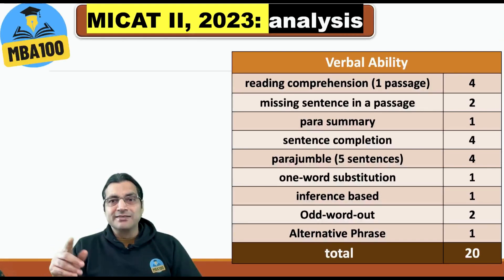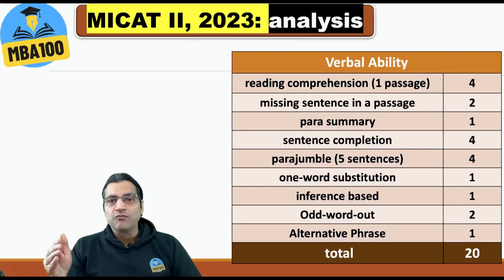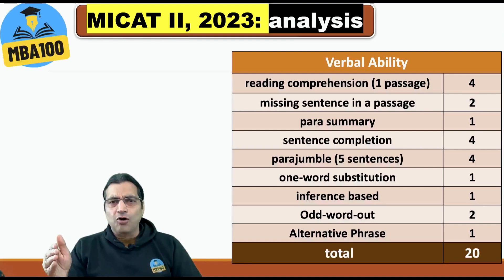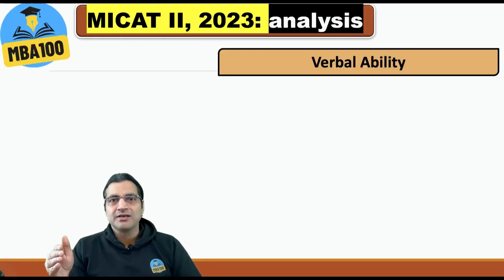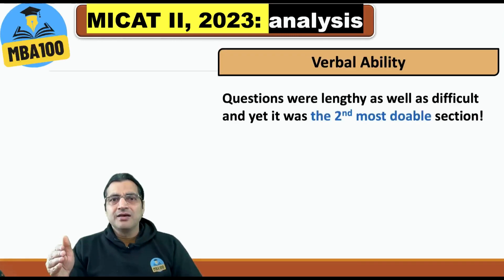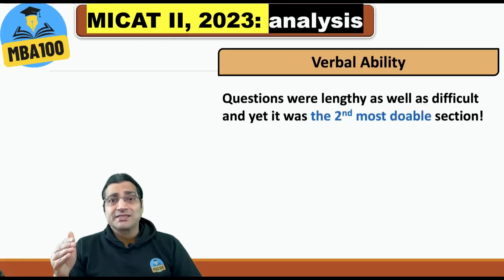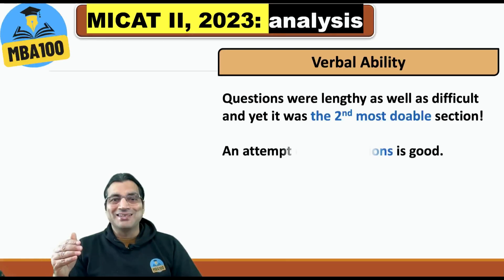Para-summary — one question with four sub-parts. Para-jumble — four questions. One-word substitution — one question. Inference-based — one question. Odd word out — two questions. Alternative phrase — one question. Questions were lengthy as well as difficult, yet it was the second most doable section. An attempt of seven to eight can be considered good.